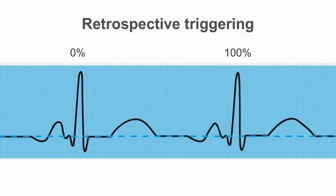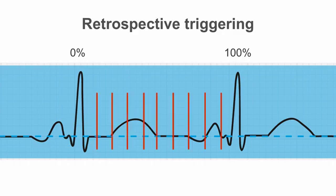When we take two consecutive R-waves, this is known as the R-to-R interval. The first R-wave represents 0% of the R-to-R interval and the second R-wave 100% of the R-to-R interval. To obtain moving pictures throughout the cardiac cycle, the X-ray tube must be on for the duration of the cardiac cycle — in other words, 100% of the R-to-R interval. Normally, images are reconstructed at every 10% phase to obtain a moving image.